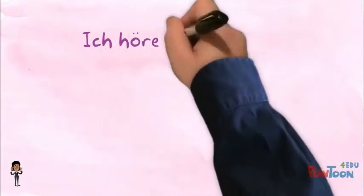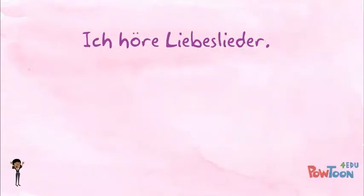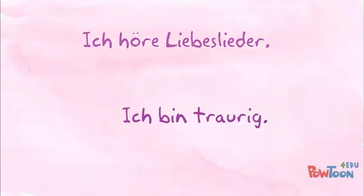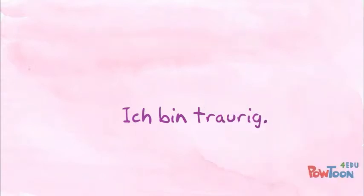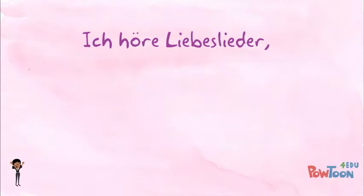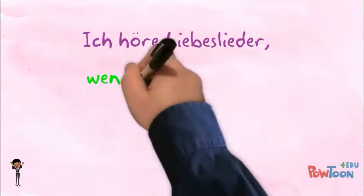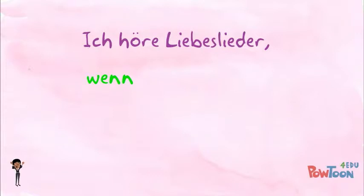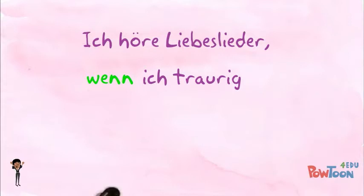Let's look at two sentences which we might want to join together: Ich höre Liebeslieder — I listen to love songs — and Ich bin traurig — I'm sad. We want to join them and say 'I listen to love songs when I'm sad.' The beginning stays the same: Ich höre Liebeslieder, and we put a comma. We insert wenn, and in the second clause we send the verb to the end — in this case bin — so it becomes: wenn ich traurig bin.